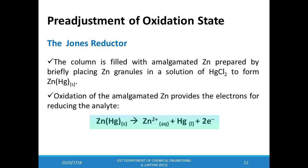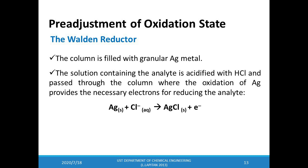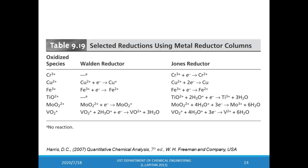The oxidation of zinc in the Jones reductor provides electrons for reducing the analyte, while oxidation of silver in the Walden reductor provides the necessary electrons. This table provides a summary of several applications of the reduction columns. You can pause this video and study the examples listed in this table.